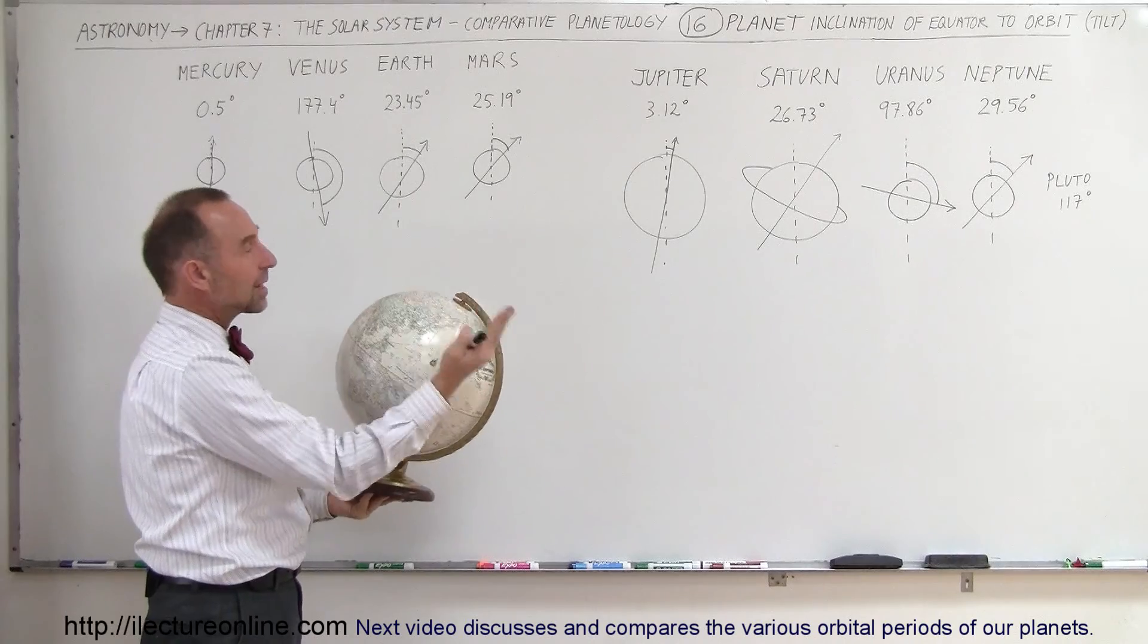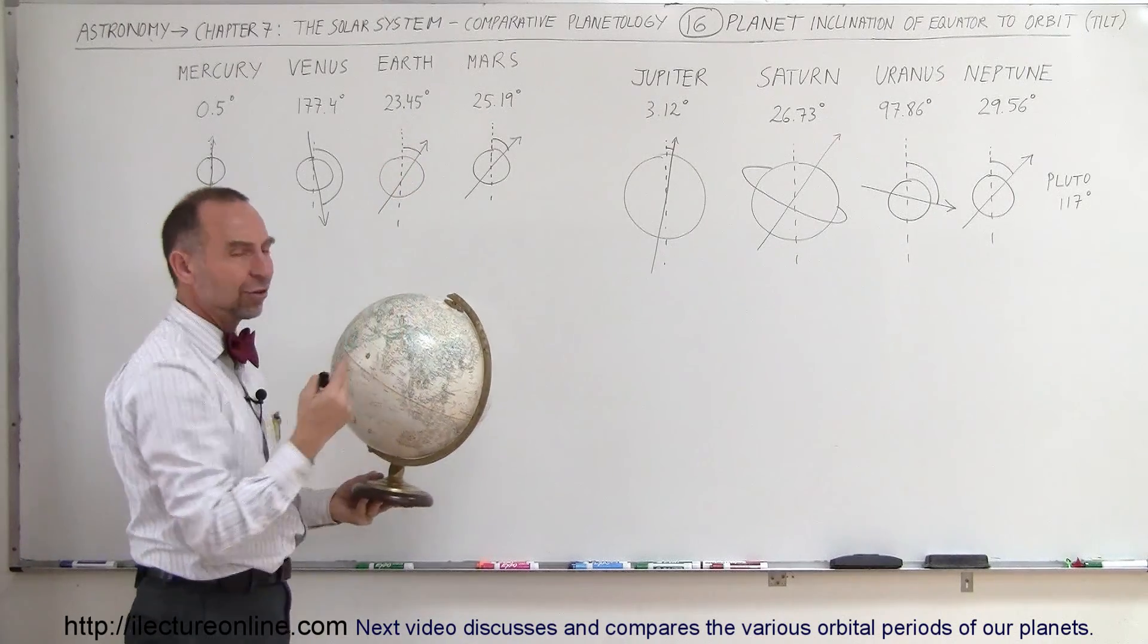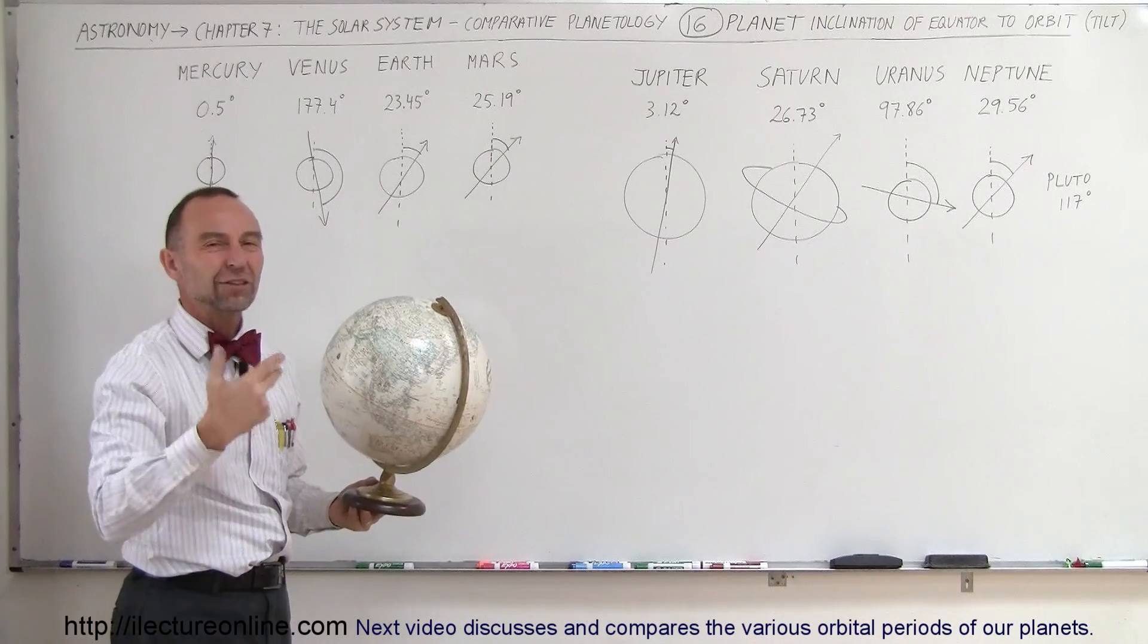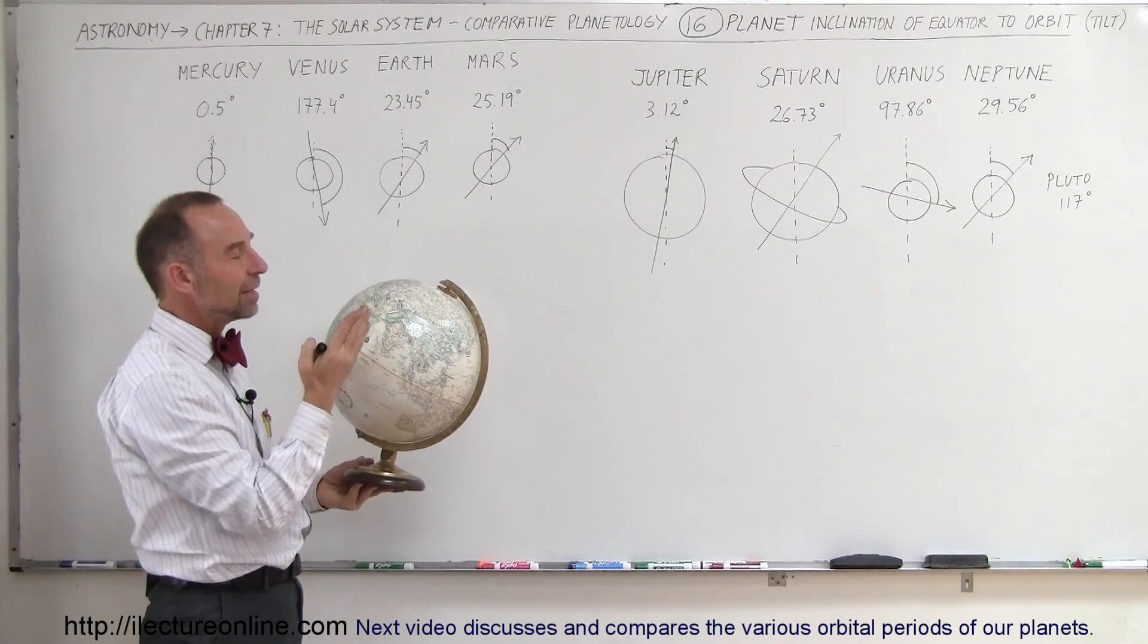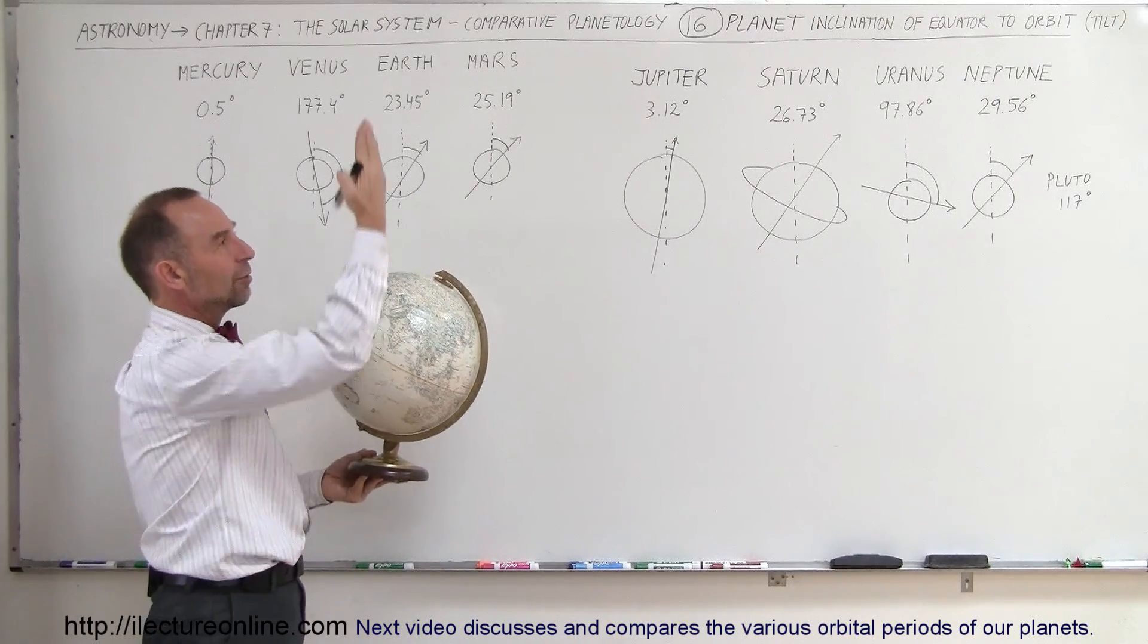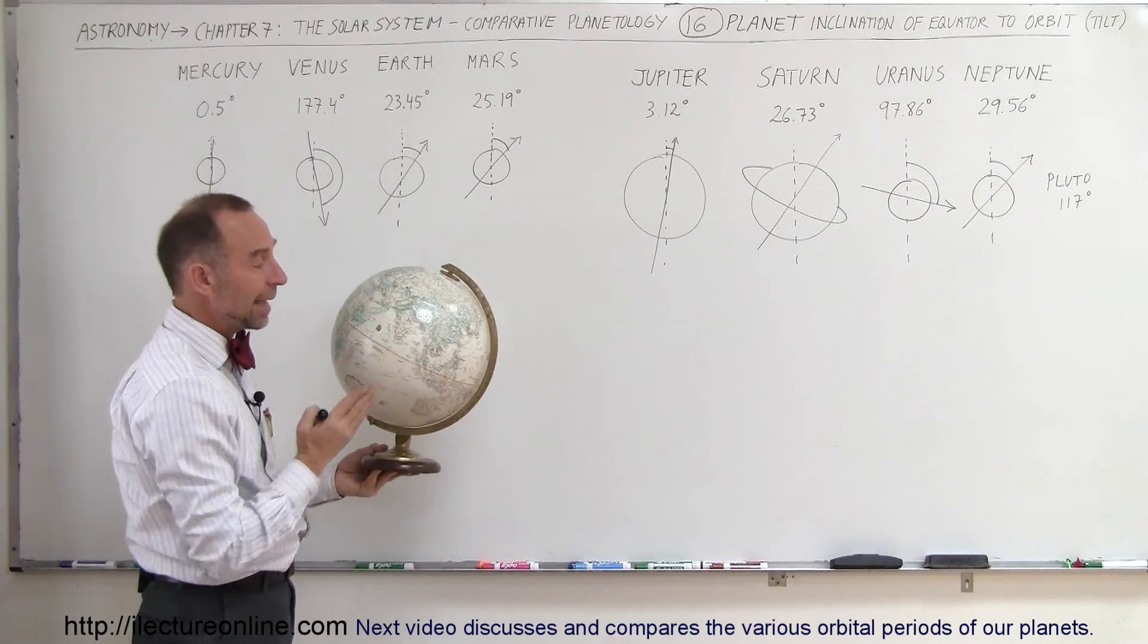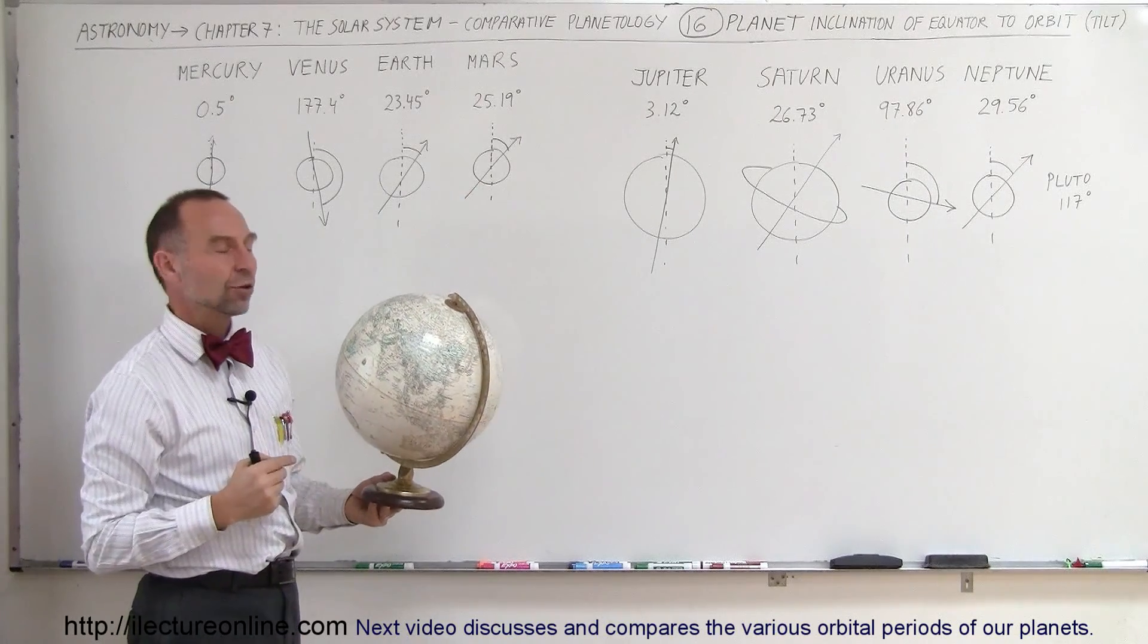So that angle right here for the Earth is 23 and a half degrees, and so that would be called the tilt of the Earth. It's basically the angle between the vertical, the perpendicular to the ecliptic plane, and the axis of rotation of the Earth.